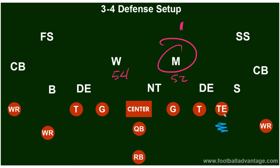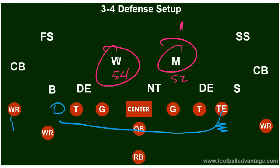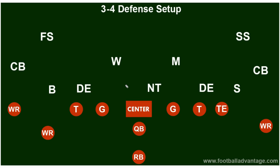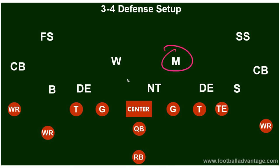If the tight end shifts from one side to the other and the defense doesn't change their front, you may need to change the mic declaration. Originally the Will at 54, but now with the tight end shifted over, this linebacker becomes the mic — so you'd call 'Mic 54.' It's still one, two — that first inside linebacker on the strong side in a 3-4 is usually defined as the mic. A little different, but don't overthink it.